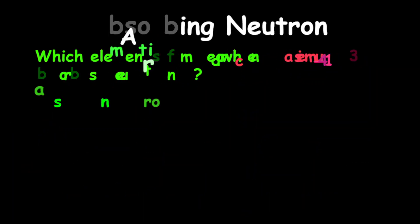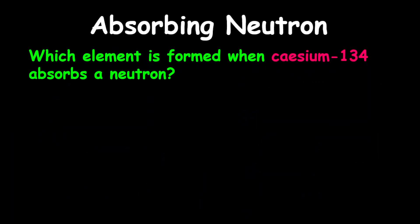For our final example, we're looking at an absorption of a neutron. The question reads, which element is formed when cesium-134 absorbs a neutron?